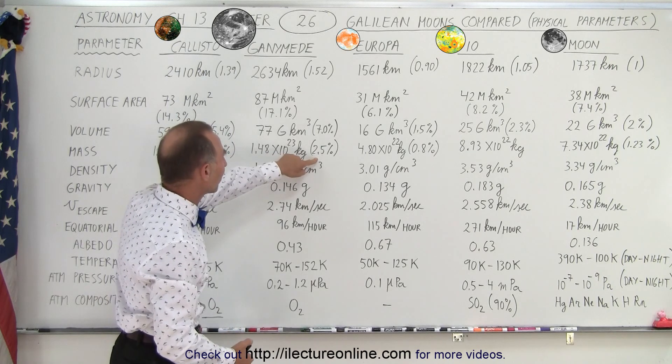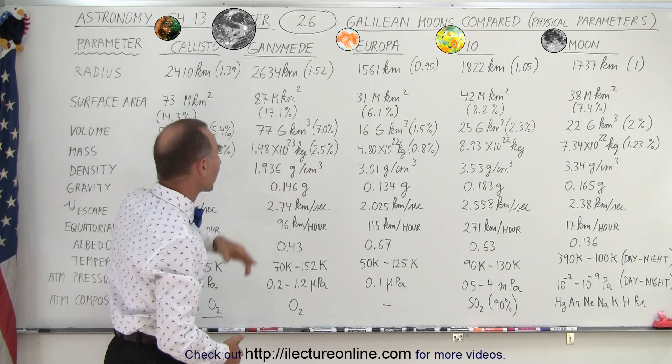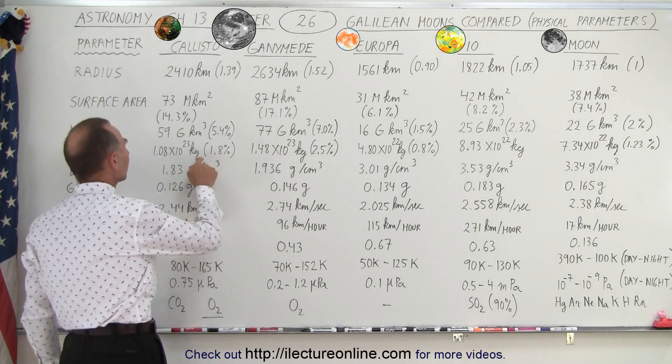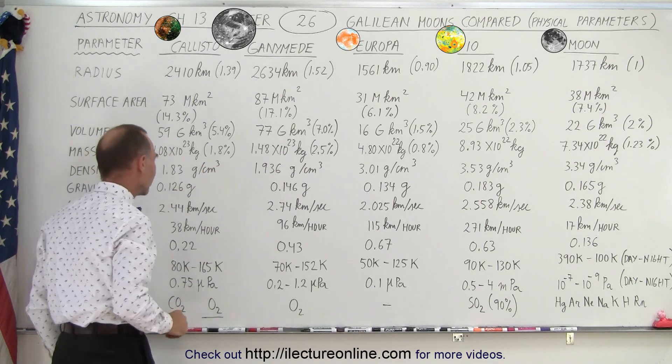Ganymede is 2.5% the mass of the Earth. So that means you need 40 Ganymedes to make up one Earth. And you need a little over 50 Callistos to make up one Earth.